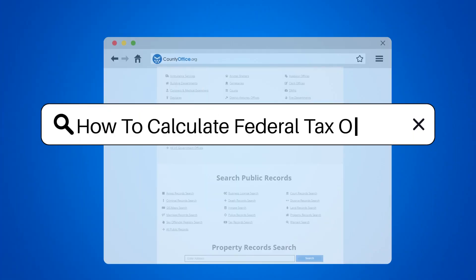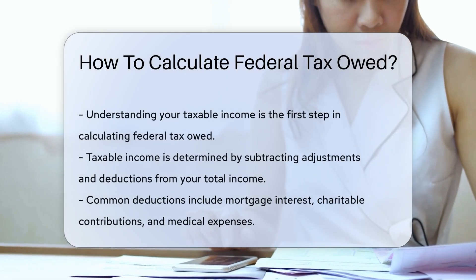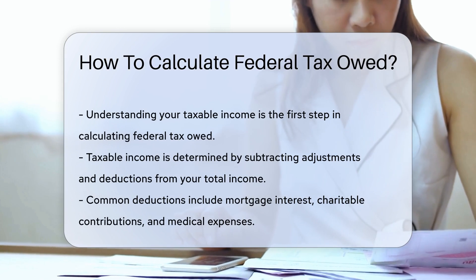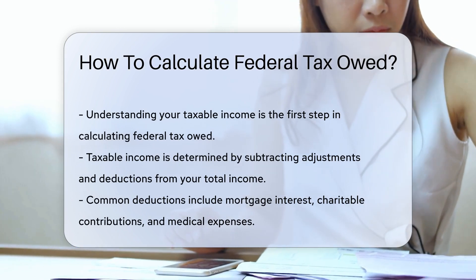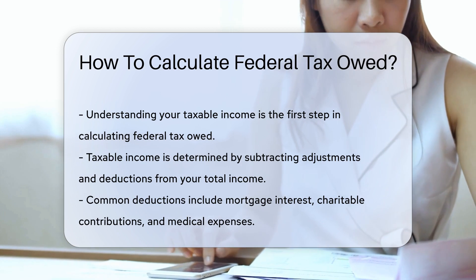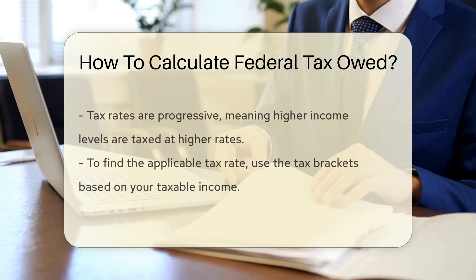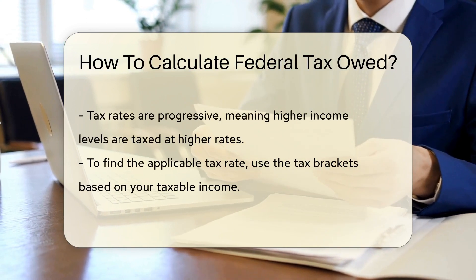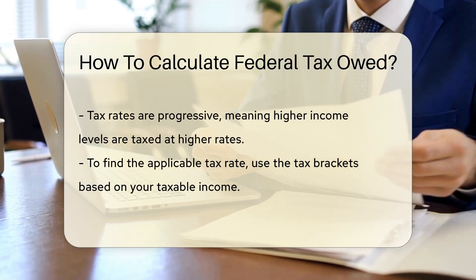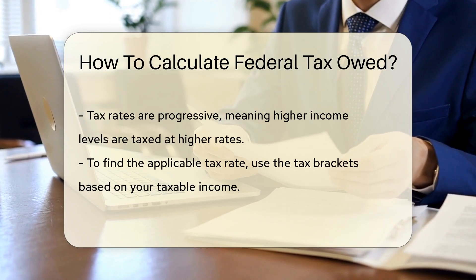How to Calculate Federal Tax. Calculating federal tax involves understanding your taxable income, deductions, and tax rates. Taxable income is your total income minus adjustments and deductions. Deductions can include expenses like mortgage interest, charitable contributions, and medical expenses. Tax rates vary based on income levels, with higher incomes generally taxed at higher rates.